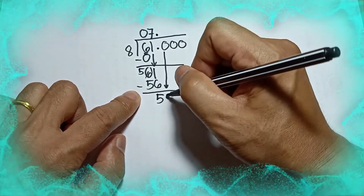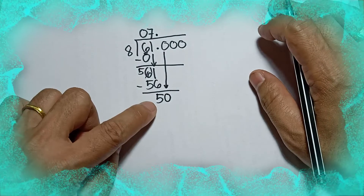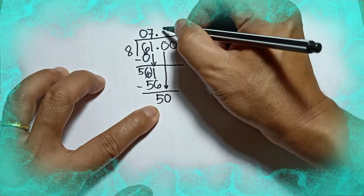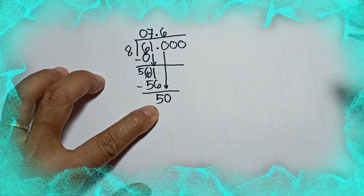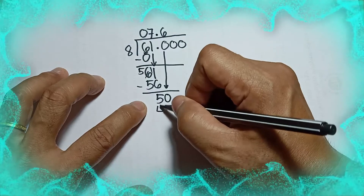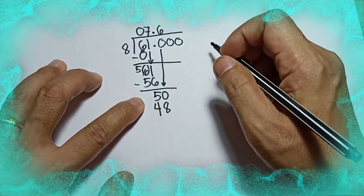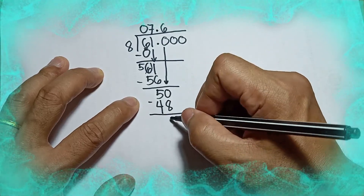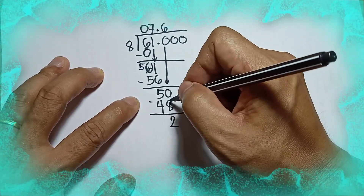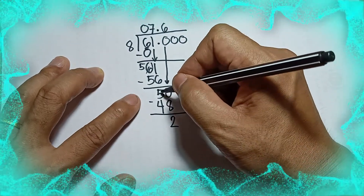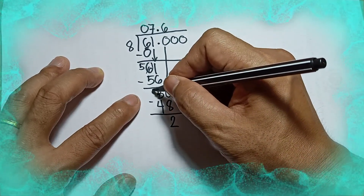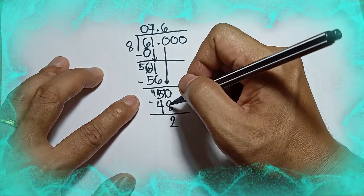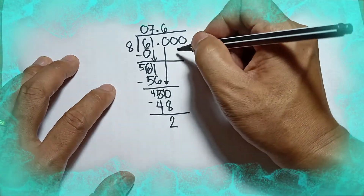Then the next number is 0, so bring it down. How many 8s can you make from 50? You can make 6. 6 times 8 is 48. Then 50 minus 48 is 2, because 0 minus 8 cannot be, so we have to borrow 1 from 5. So 5 becomes 4 and 0 becomes 10. Then 10 minus 8 is 2. Then bring down another 0.